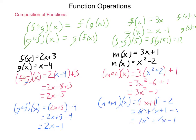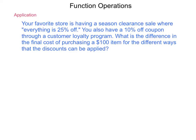Now, the question is, where are we ever going to use this? What type of application is involved? Your favorite store is having a season clearance sale where everything is 25% off. You also have a 10% off coupon through a customer loyalty program. What is the difference in the final cost of purchasing a $100 item for the different ways that the discounts can be applied? So, we need two equations here. We have our sale, which is, if things are 25% off, then it's 75% of the original price. And our second equation is the coupon. If we get 10% off the coupon, then we are still paying 90% of the money.